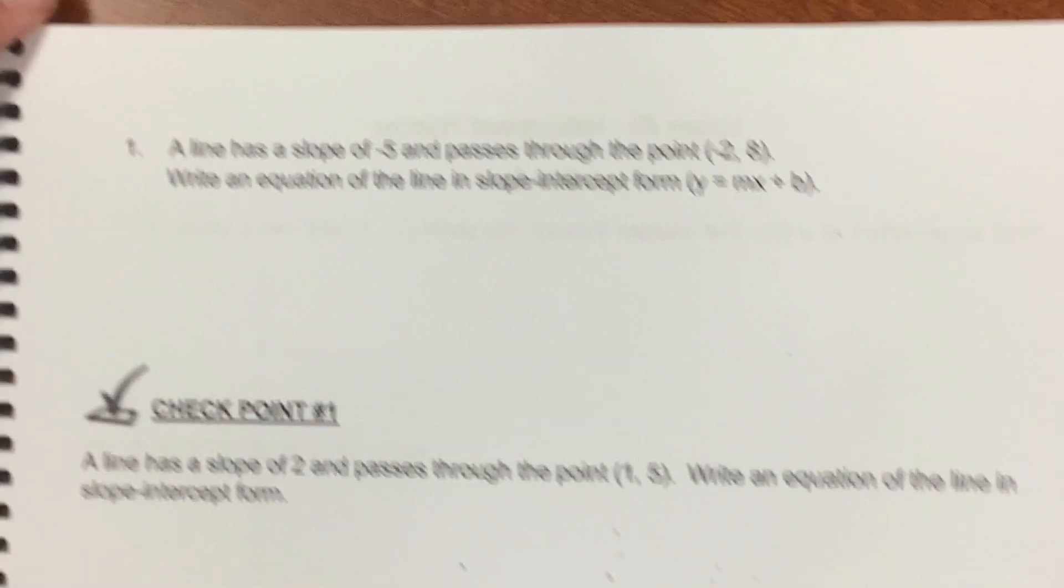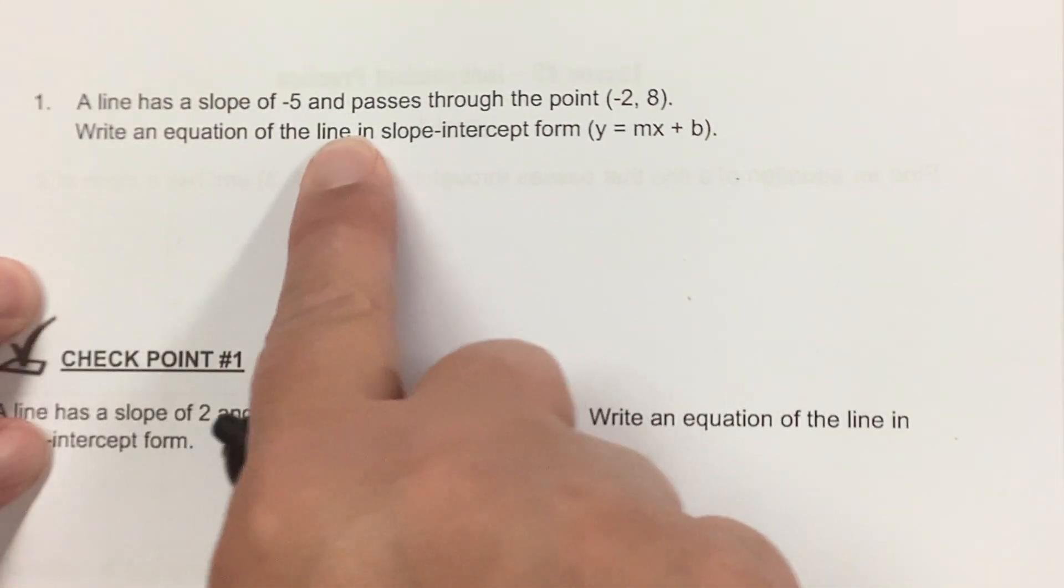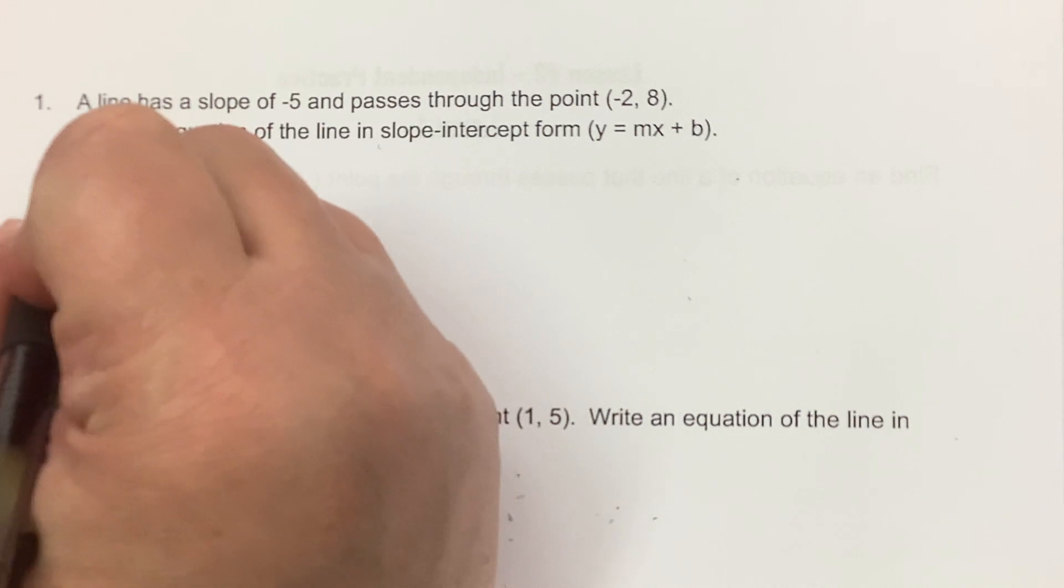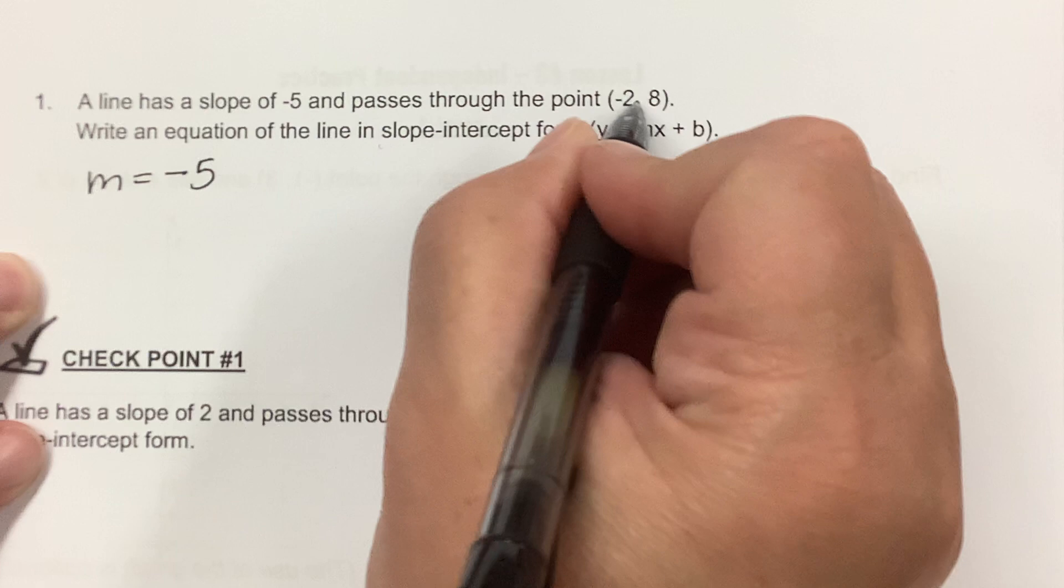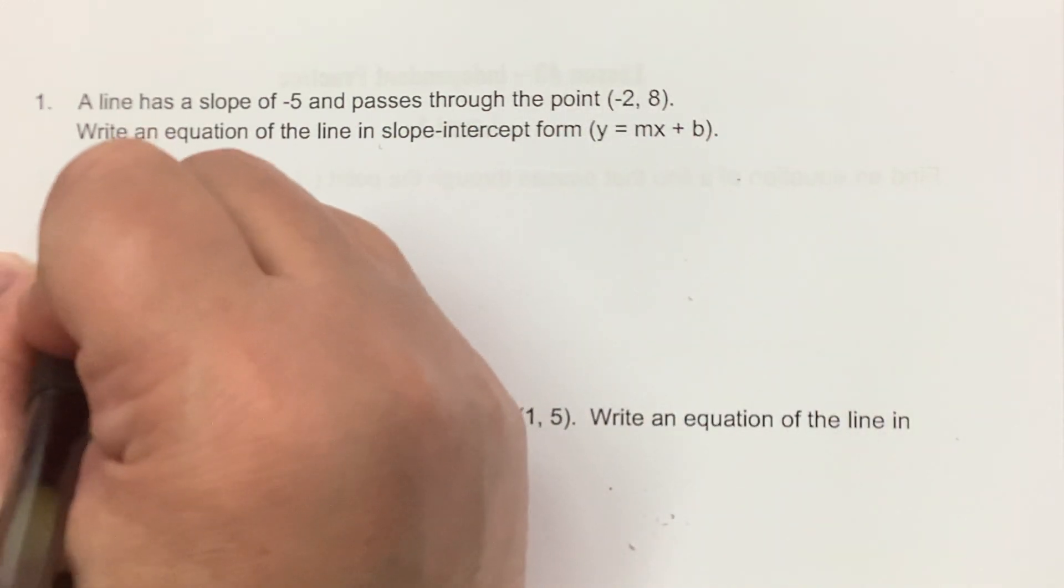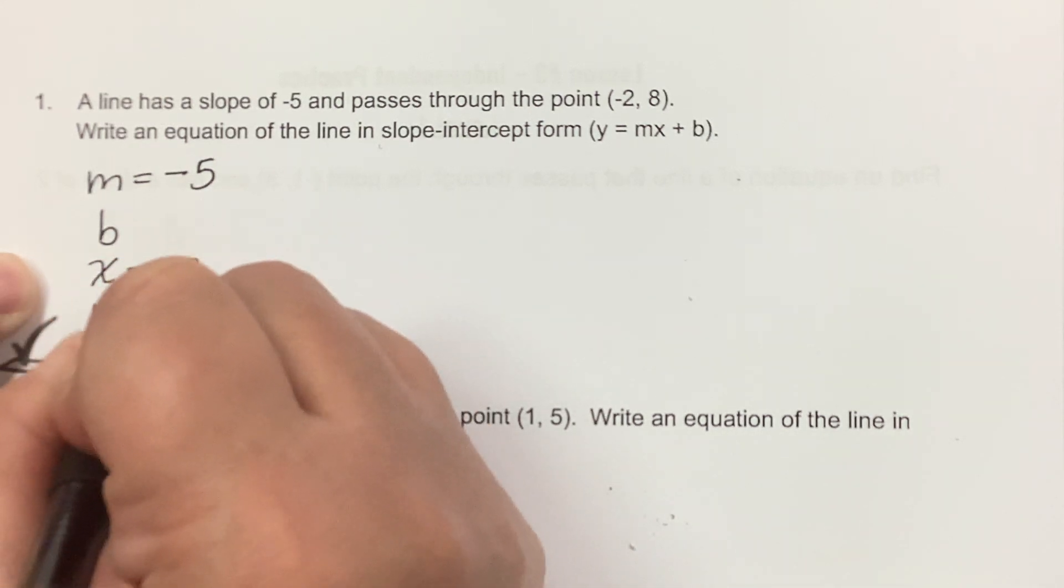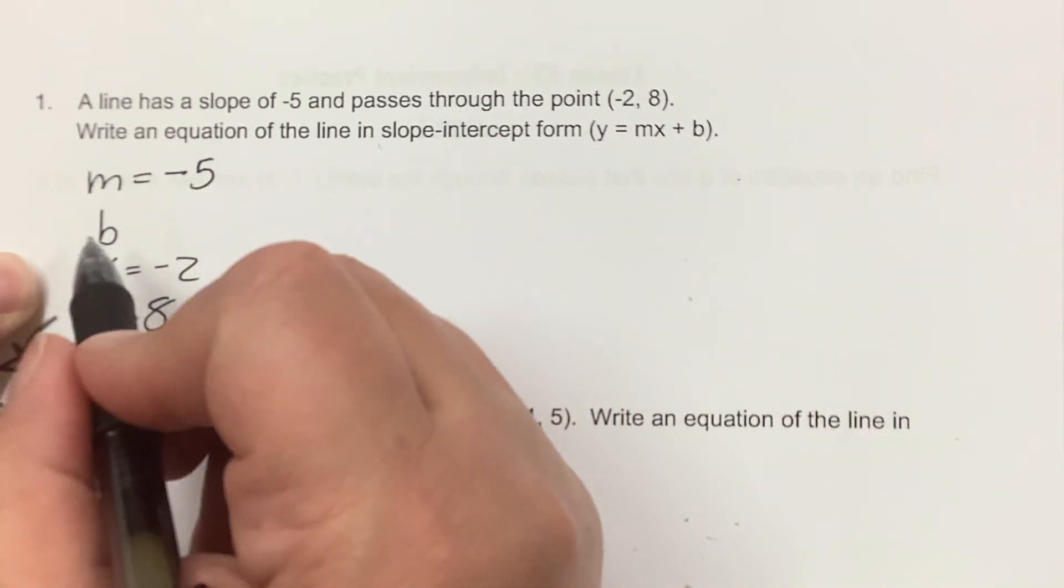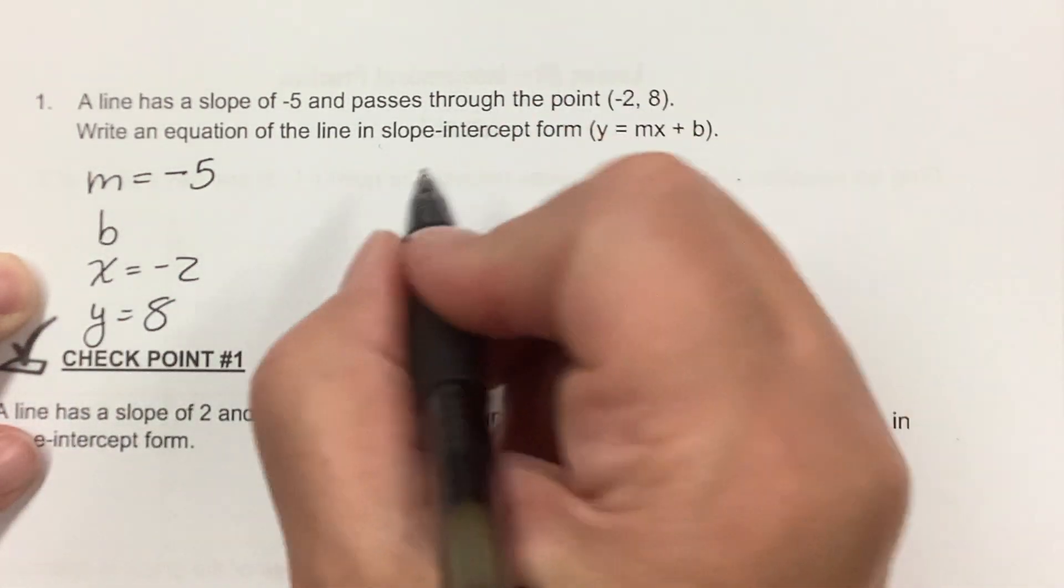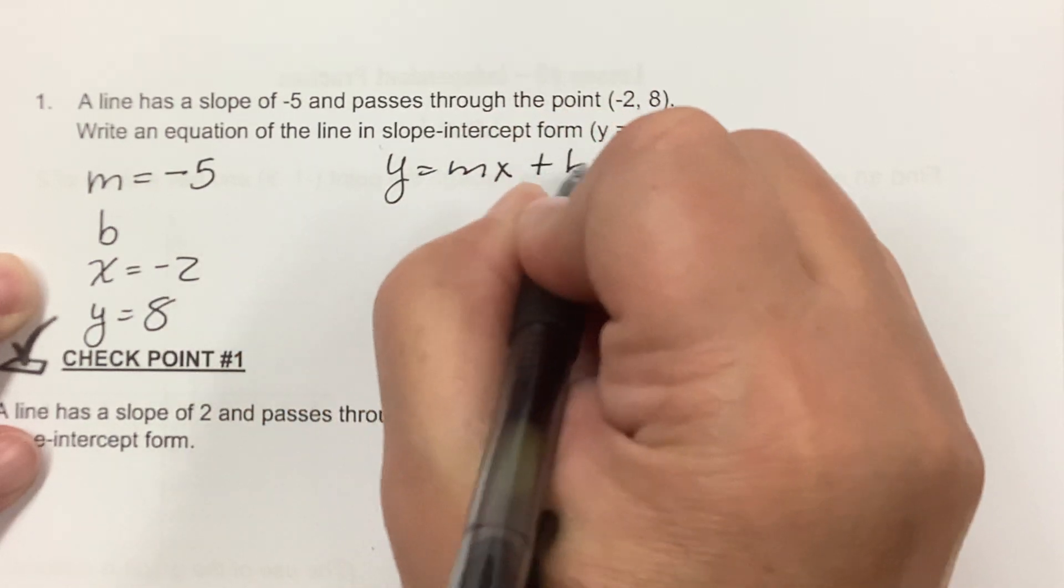So y equals 3x minus 2. It's kind of easy once you get the hang of it. In my opinion, you should always write down the given information before you substitute it. It will help you in the long run. So let's do some practice problems. Here we go. A line has a slope of negative 5. So I already know m equals negative 5. Passes through the point negative 2, 8. I don't know b. I know x is negative 2 and I know y is 8.